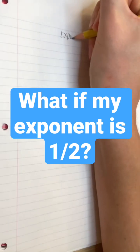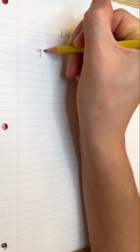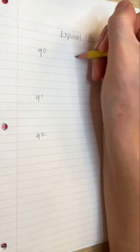Exponents represent repeated multiplication of the same number, but what does it mean for an exponent to be 1 half? Let's list a few expressions using base 9 and look for a pattern.